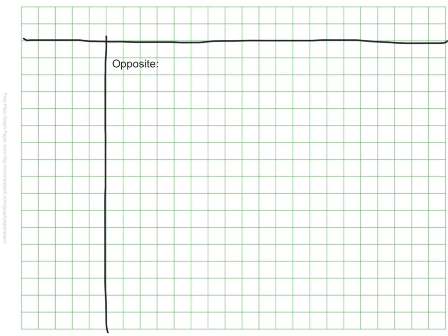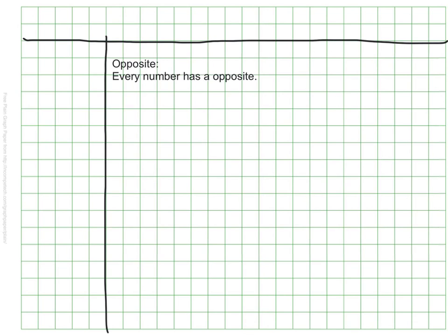The first word we need to know is opposite. Every number has an opposite. These are numbers that are the same distance from zero, but in the opposite direction. Let's take a look at a number line.